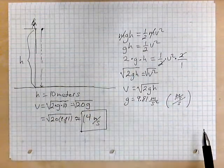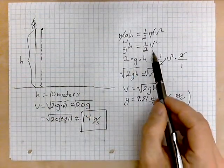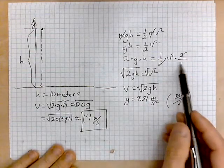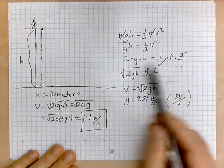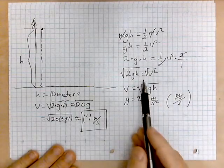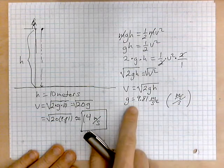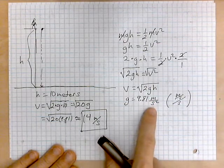Cancel out the M's so it doesn't matter whether it's a person or an elephant being dropped. The rest of it is mathematics so you multiply by 2 over 1 on both sides. Take square roots. G is replaced with 9.81 meters per second squared.